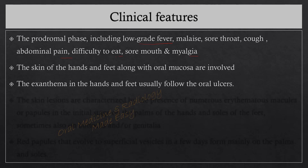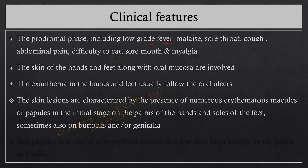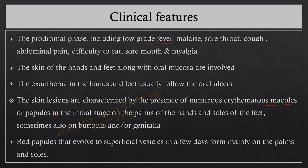The skin lesions are characterized by numerous erythematous macules or papules in the initial stage on the palms and soles of the feet, and sometimes also on the buttocks and genitalia. These papules then evolve into superficial vesicles within a few days, forming mainly on the palms and soles.